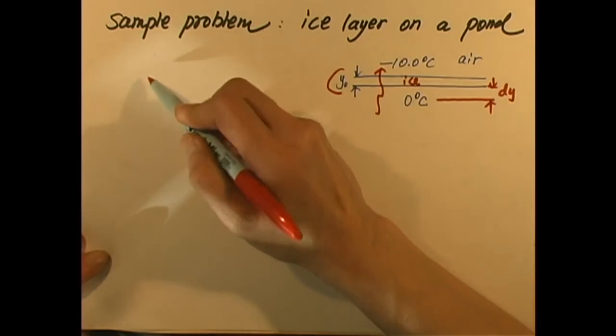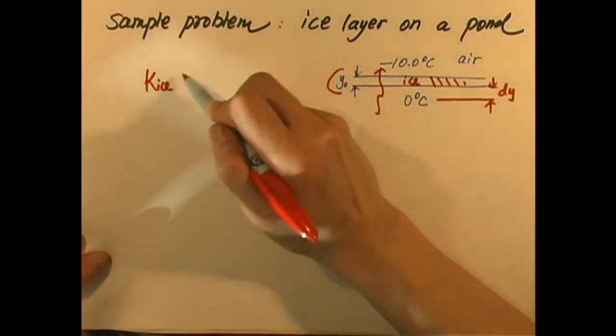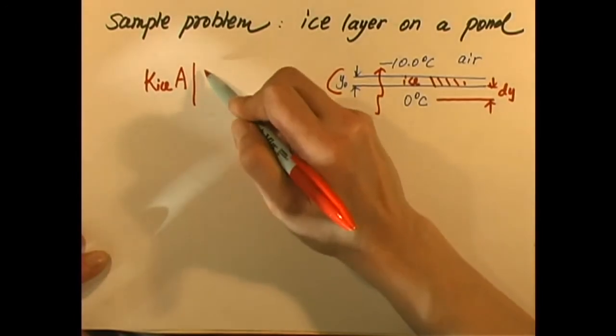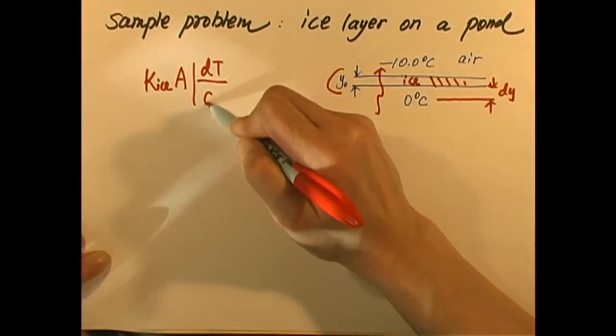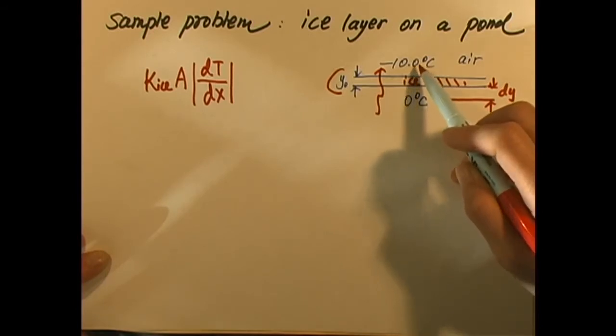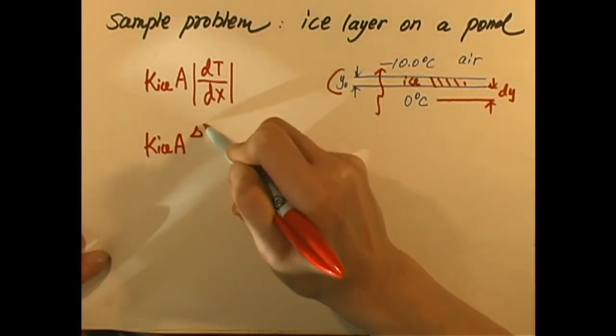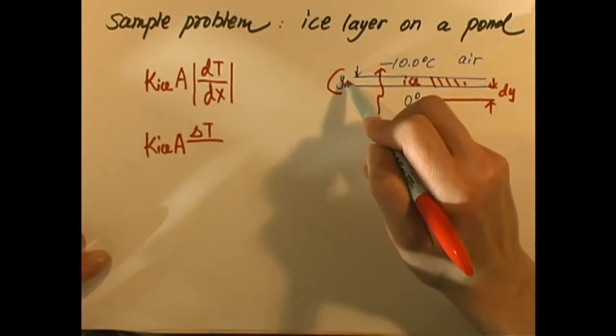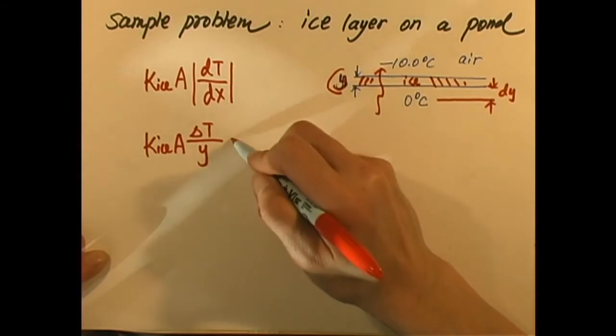According to what we learned, that is K ice times A times delta T over the thickness. In this case, it's pretty clear cut. One side is 0, the other is negative 10 degrees Celsius. So we can use K ice, A, delta T over Y, where this is the thickness Y. That's the power transmitted by a layer dy freezing.